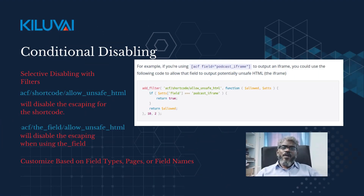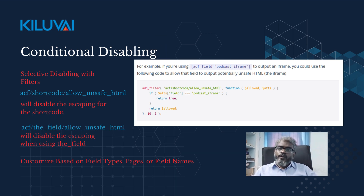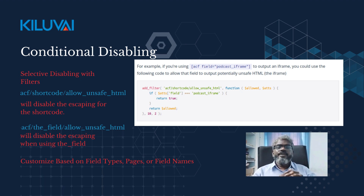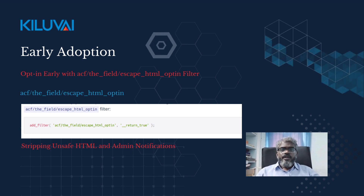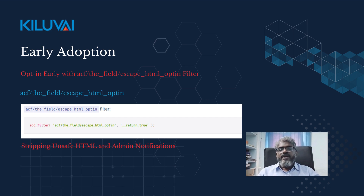Now let's talk about conditional disabling. ACF provides filters like shortcode_allow_unsafe_html and the_field_allow_unsafe_html. You can use these to selectively disable automatic escaping for specific field types, pages, or field names. If you are confident in your current security practices, you can opt in early to the new behavior using the escape_html_opt_in filter. This allows you to strip unsafe HTML immediately and receive notifications in the WordPress admin.